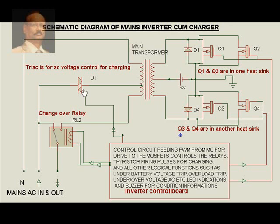Whatever control voltage is given by this triac, we get around 18 volts — a 0-18-0-18 configuration. In this process, the two inbuilt diodes of the power MOSFETs are used for charging. For example, while this half cycle is positive, current flows this way, passes through the battery, and returns through the negative for that half cycle. For the next half cycle, the positive goes the other way and completes the next half cycle, and charging takes place via the inbuilt diodes of the MOSFETs.